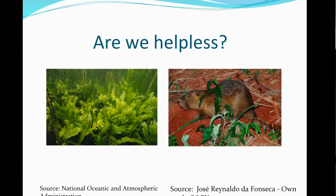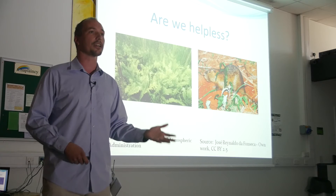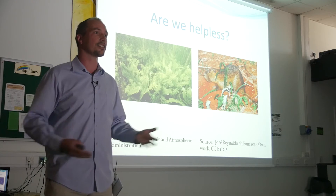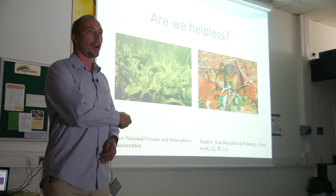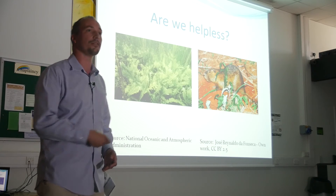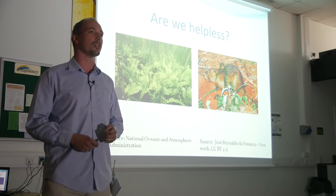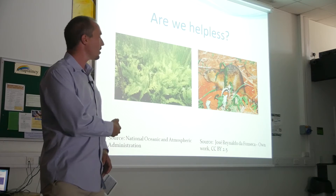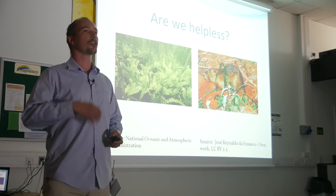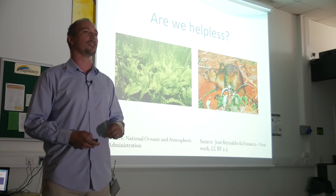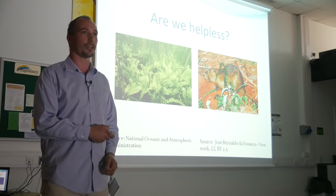Another example: this animal is called a coypu — it's related to the beaver. It turned up in the Norfolk Broads and a successful eradication programme was carried out, eradicating it by the late 1980s. So we can, in some cases, control invasive species. However, this relatively small Caulerpa invasion cost the US government around seven million dollars. The coypu invasion in the mid to late 1980s cost three million pounds to control. So we're talking significant resources and significant difficulty to control invasive species.